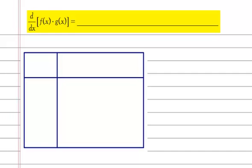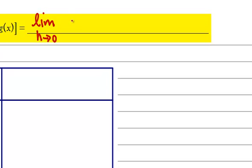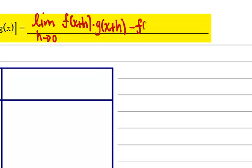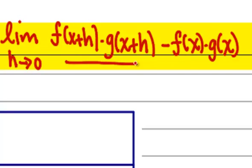So the derivative with respect to x of the product of f and g, using the limit definition of the derivative, will be the limit as h approaches 0 of f of x plus h times g of x plus h, minus f of x times g of x, all over h.